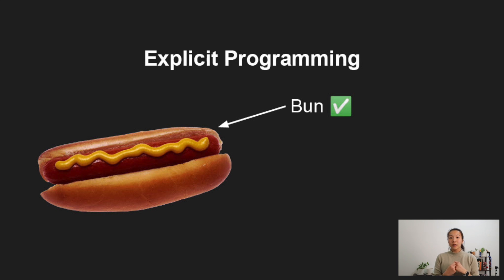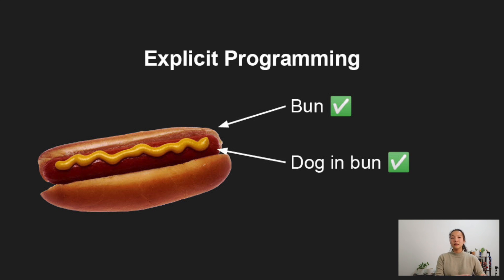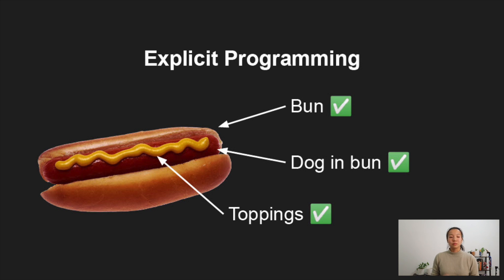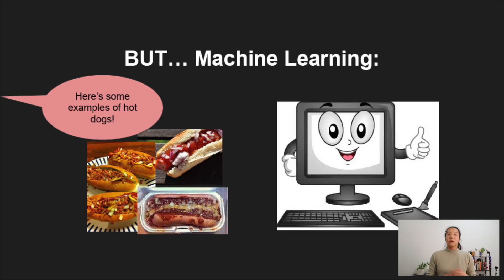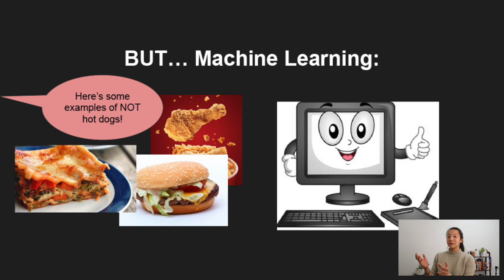For example, if I wanted to know whether or not an image contained a hot dog, explicit programming would be us, the programmers, saying: if there is a bun in the image, and if there is a hot dog in the bun, and if there's relish or mustard or whatever you want to put on your hot dog, and if all of these things are true, then it's a hot dog. But in machine learning, we're not going to be telling our computer these things.